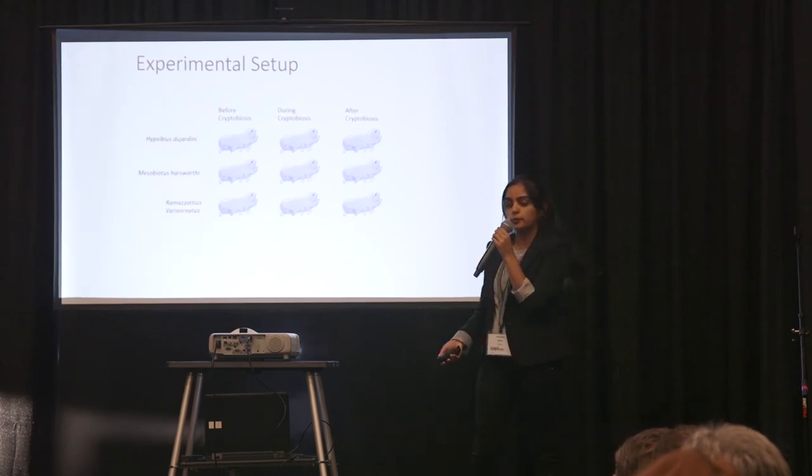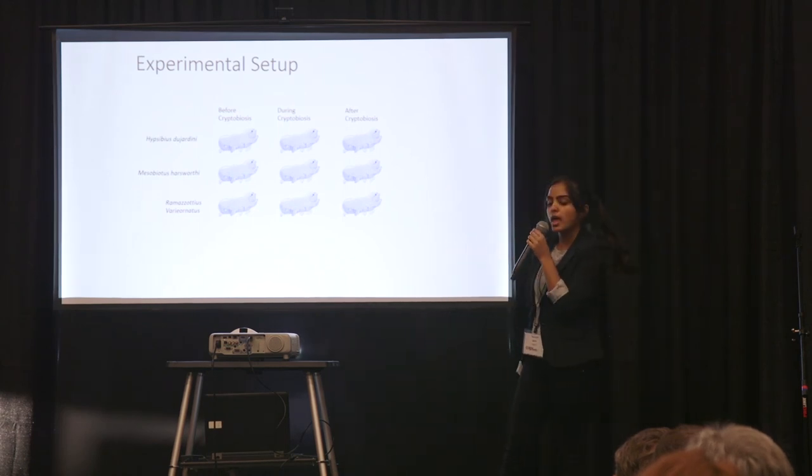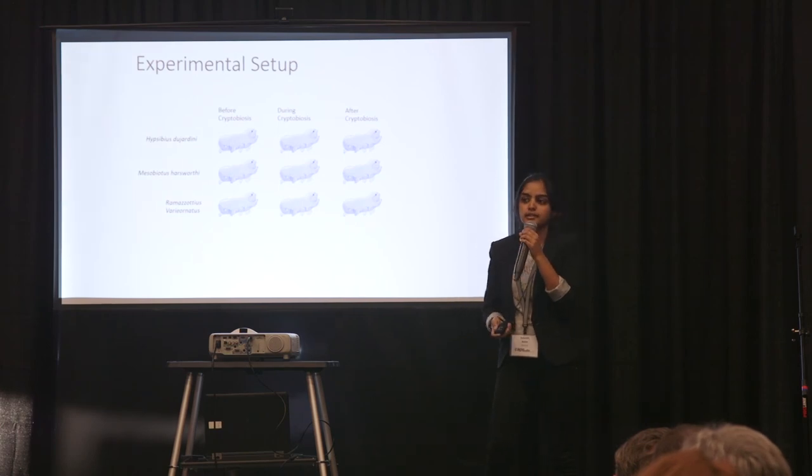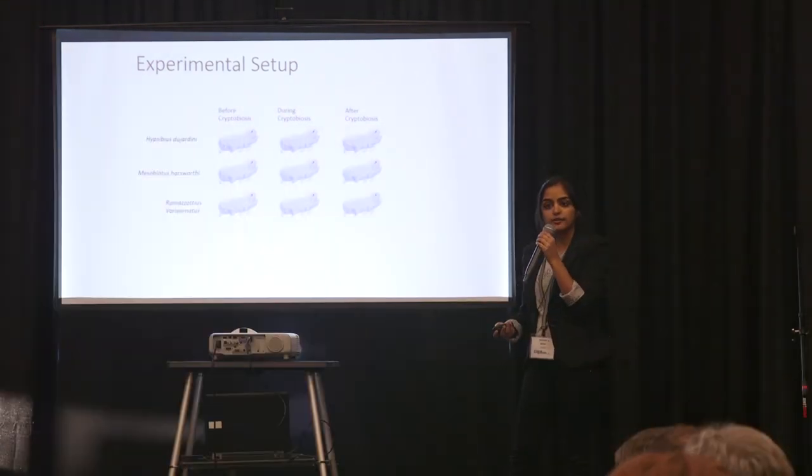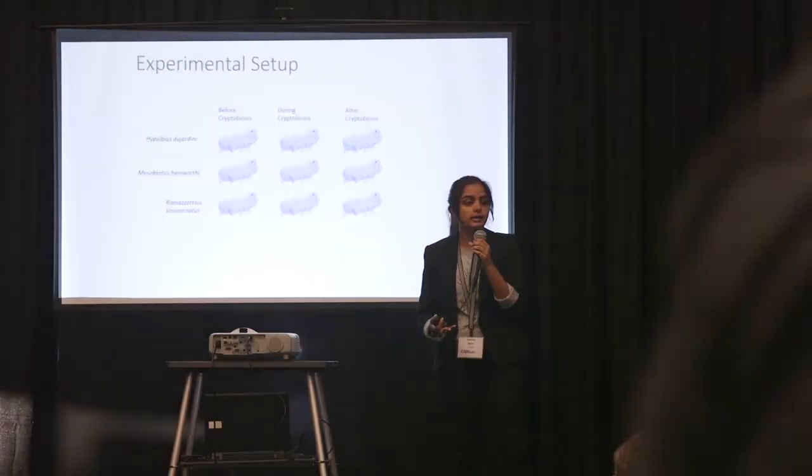Mesobiotus Duxbury, the middle one, is the most commonly found tardigrade. And the last species up there is known as a tolerant species, meaning that it is able to survive more extremes than others. So I hypothesized that this species would have the highest rate of DNA repair.